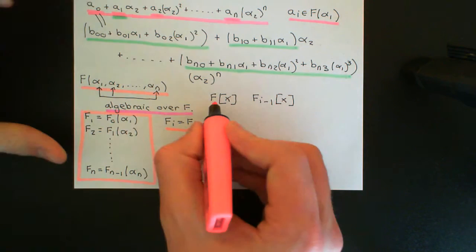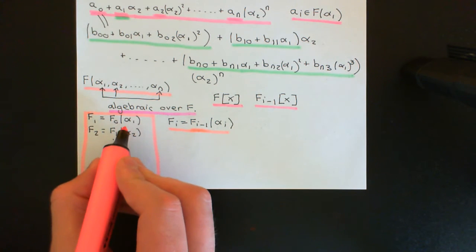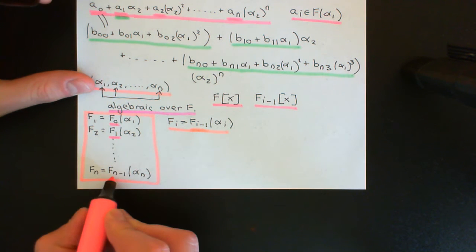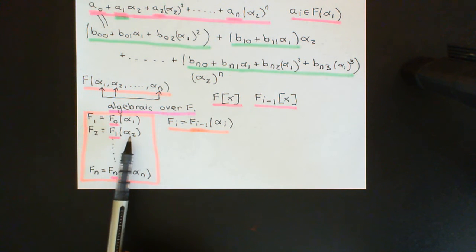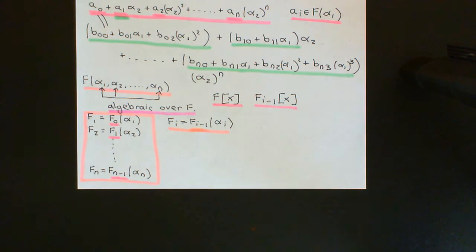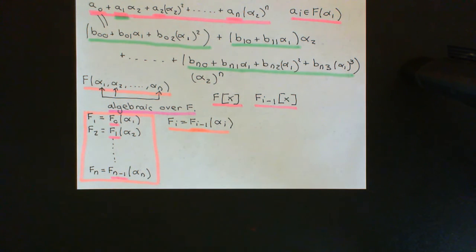So if α₁, α₂, all the way up to αₙ are algebraic over the field F, then they're all going to be algebraic over the necessary field extensions of F that we need them to be algebraic over. All of these simple extensions are generated by an element that's algebraic over the field we're trying to extend, meaning we have a complete understanding of all of these individual simple extensions — and that means we can build the entire finitely generated field extension. That's why this was such a useful theorem to know.